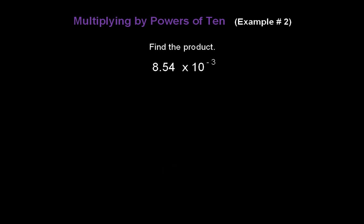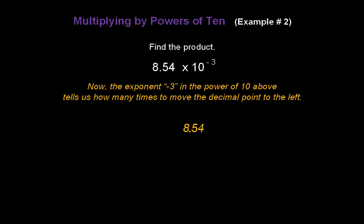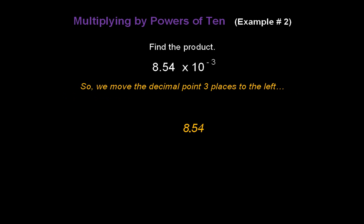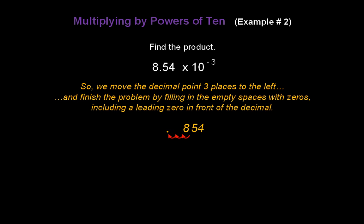Let's find the product of 8.54 times 10 to the negative third. Start by writing down 8.54. The exponent negative 3 tells us how many times to move the decimal point to the left. Move the decimal three places to the left: one, two, three. Finish the problem by filling in empty spaces with zeros and include a leading zero in front of the decimal. The answer is 0.00854.